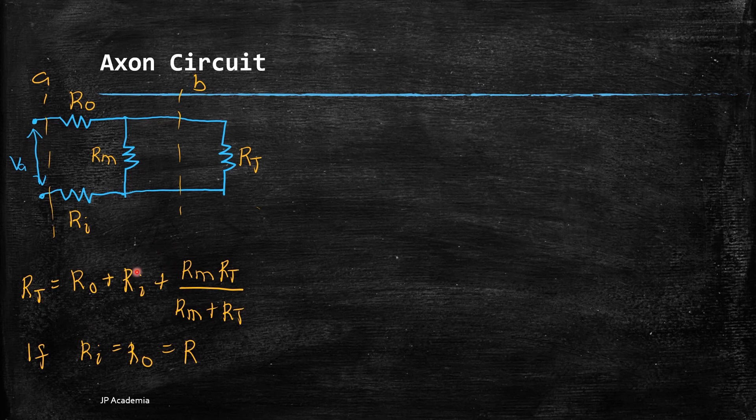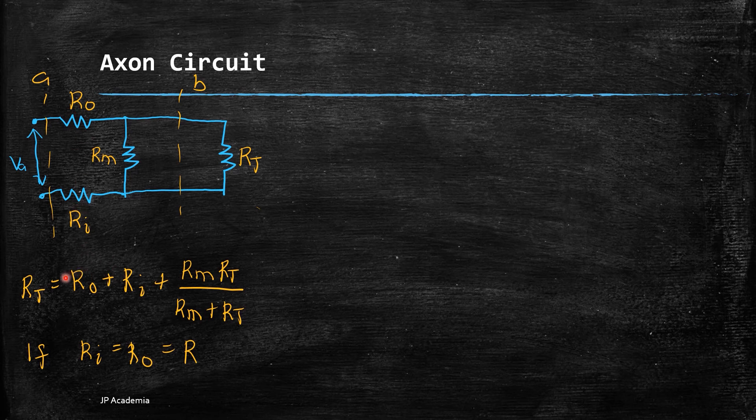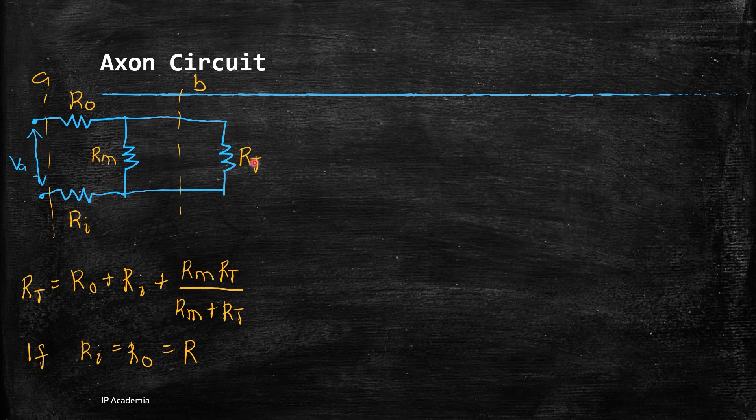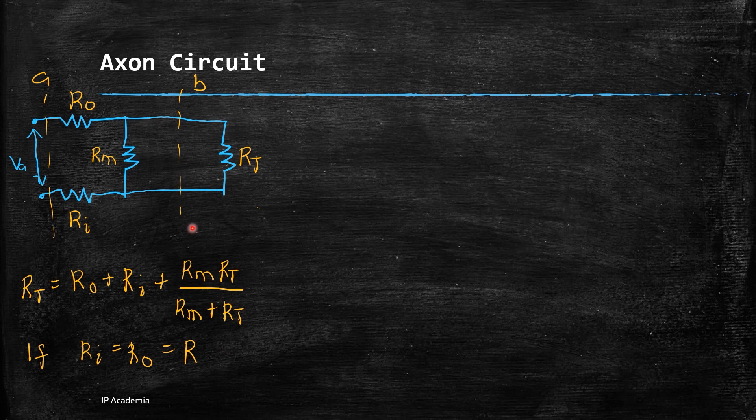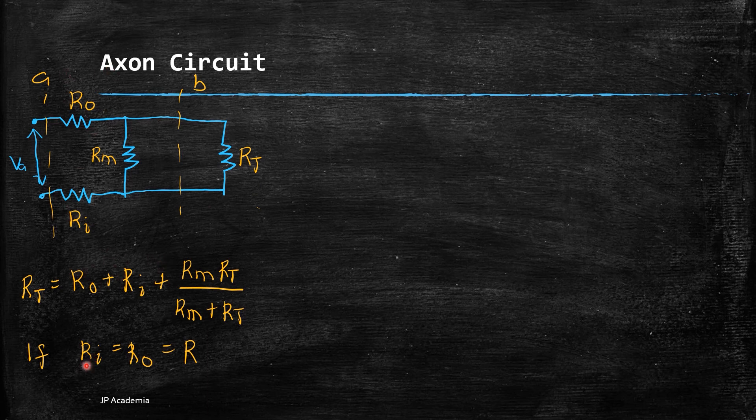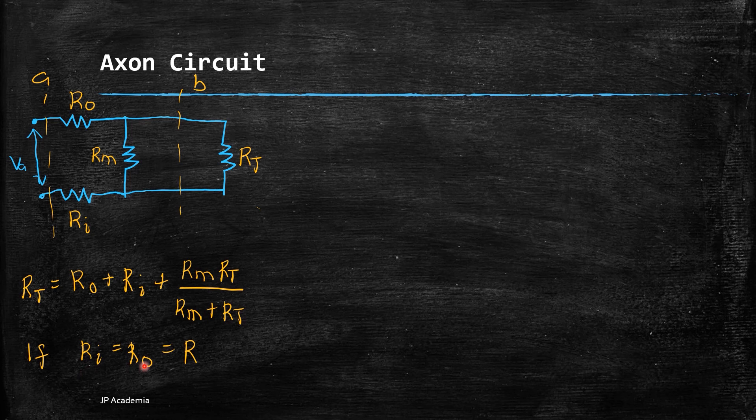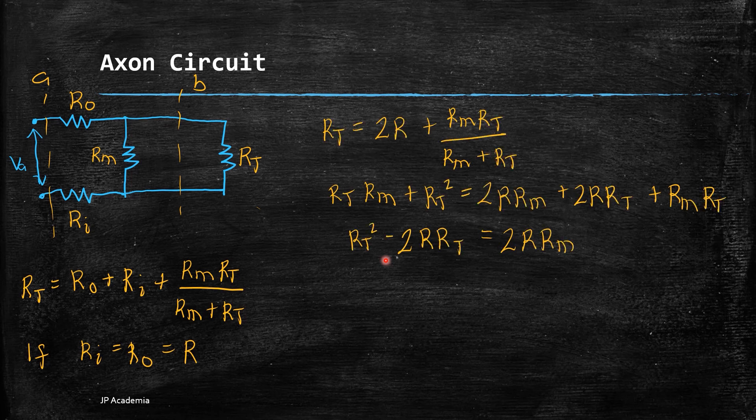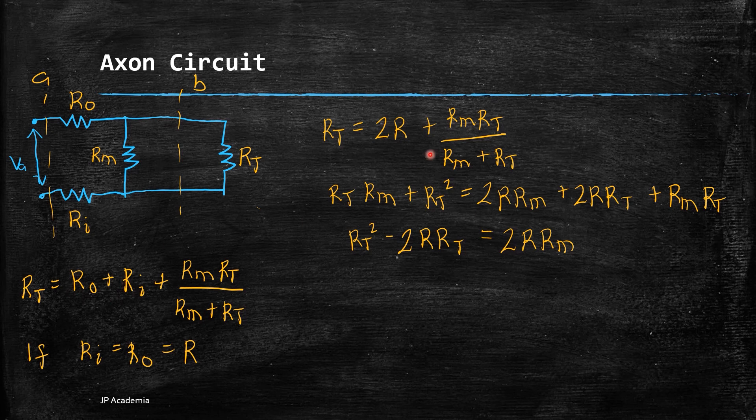We will calculate this effective resistance. We have R₀ + R_I. We'll assume that they are in series, but first we should get the expression for these two resistors which are parallel with respect to each other. The equivalent resistance is R_m parallel with R_T plus the resistance value of these two. If R_I = R₀, we can express that as resistance R. We can multiply both sides by R_m + R_T to get this expression.